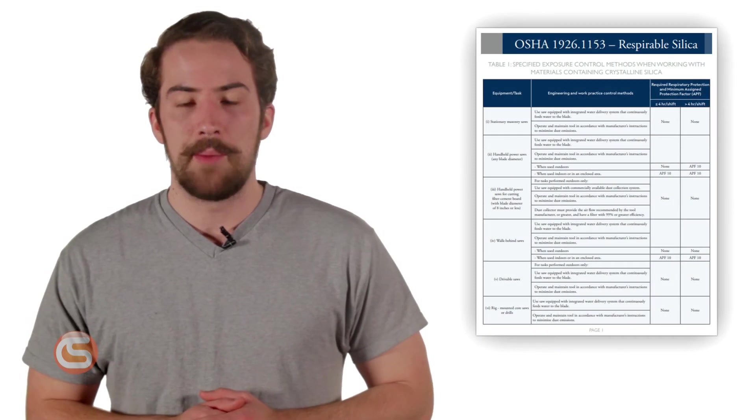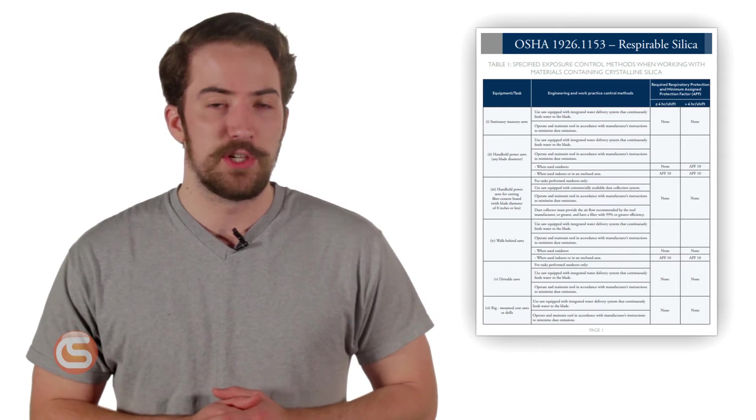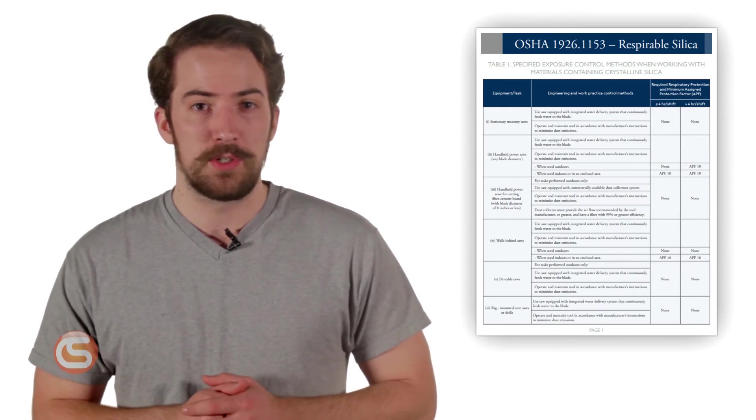Now, what precautions should you take once you pass that action level or permissible exposure level? OSHA has created a table with 18 common construction tasks, their effective control method, and their required respiratory protection for each. This table is called Table 1, and you can check it out in the description below.